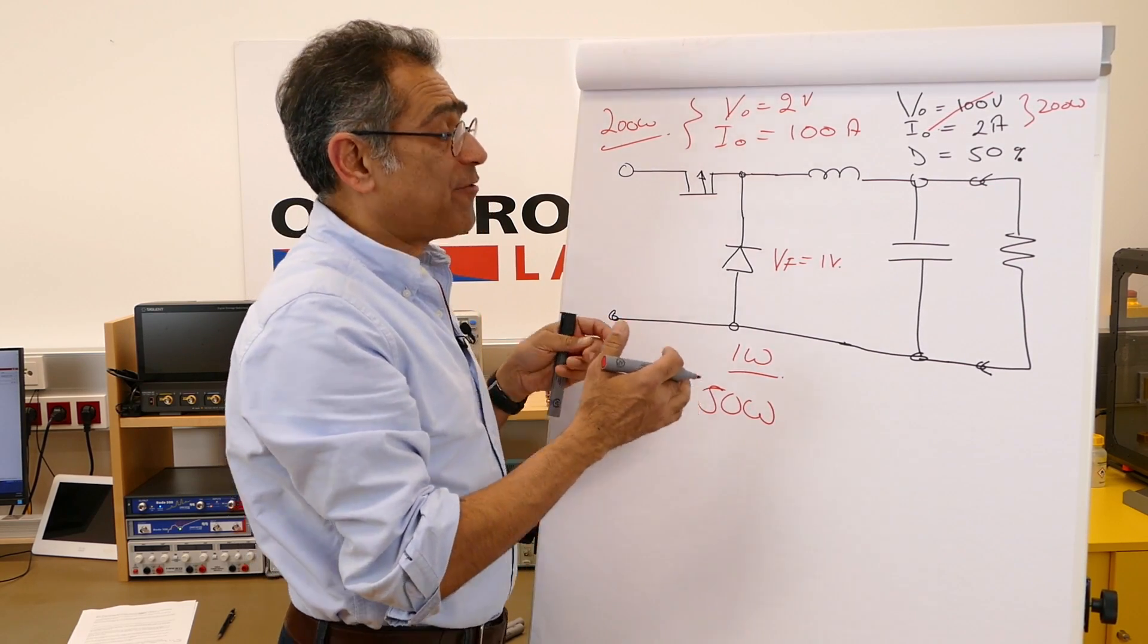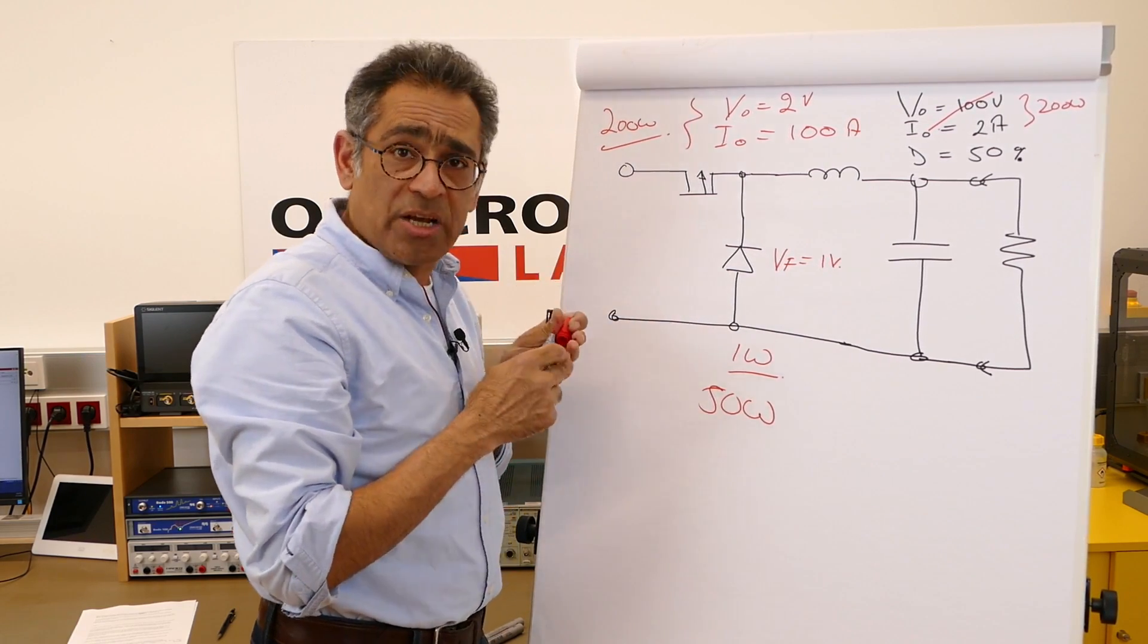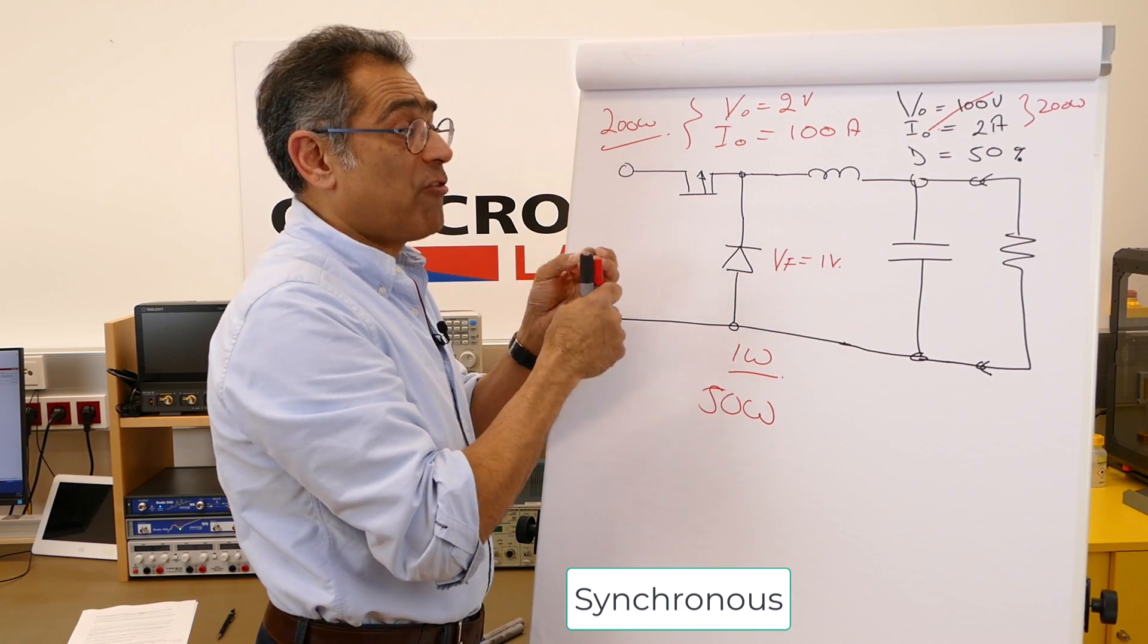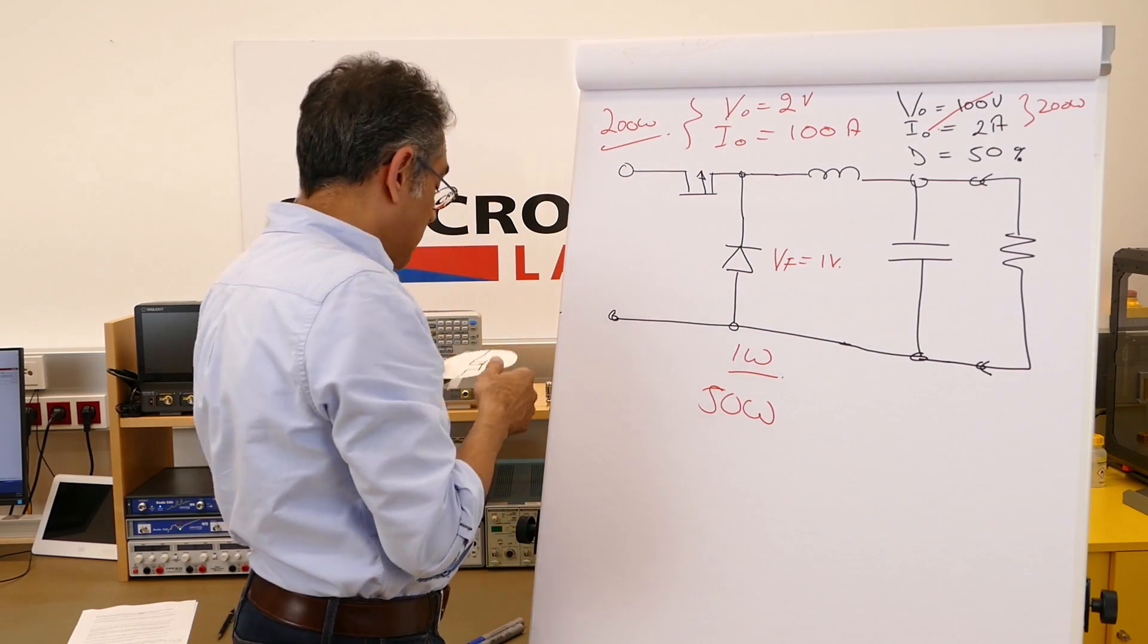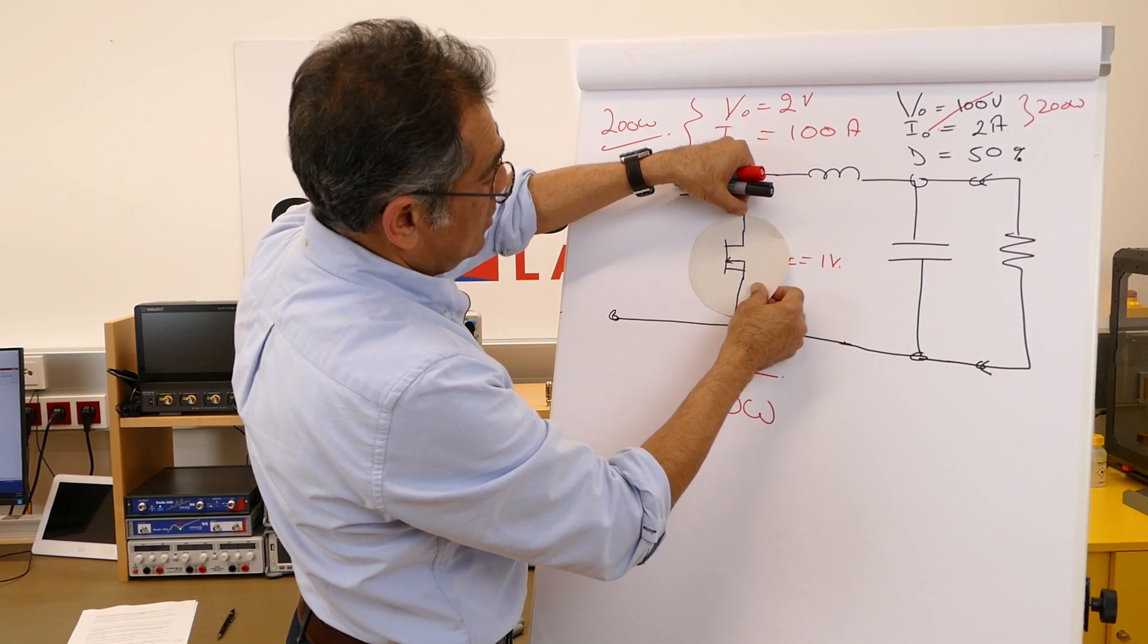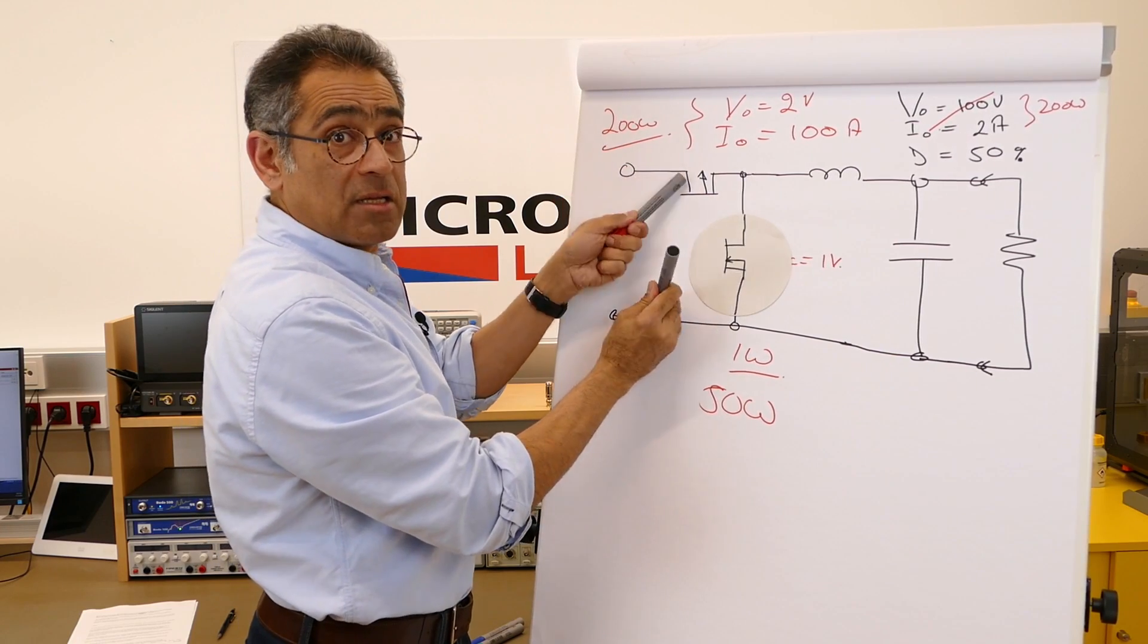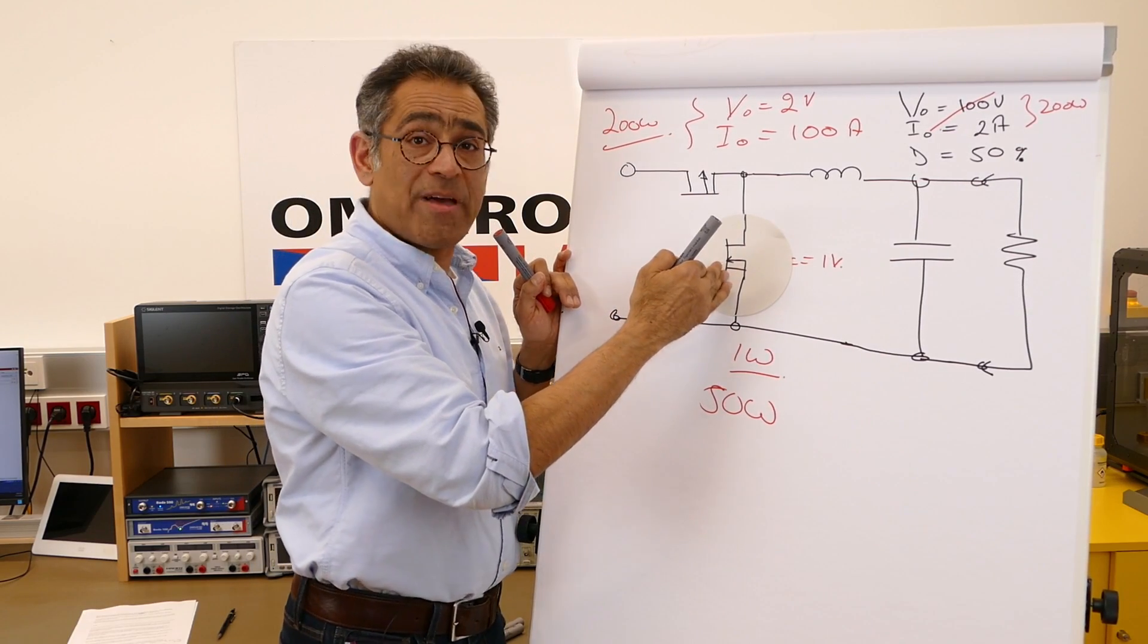Somehow we're going to have to reduce the amount of losses in this diode and this is when synchronous switching comes into play. We've invented a way of reducing the losses across this diode typically for applications where the output current is very very high. And we do that by simply adding a MOSFET instead of a diode and we switch these synchronously. So every time the diode is going to conduct we switch the FET instead.